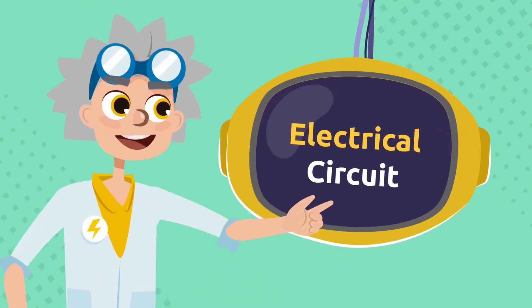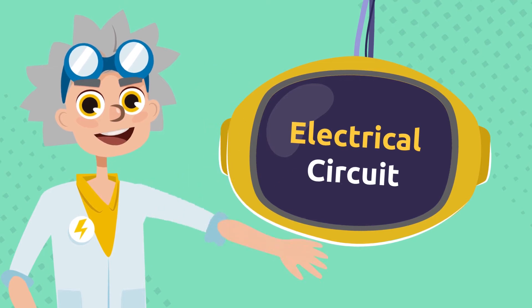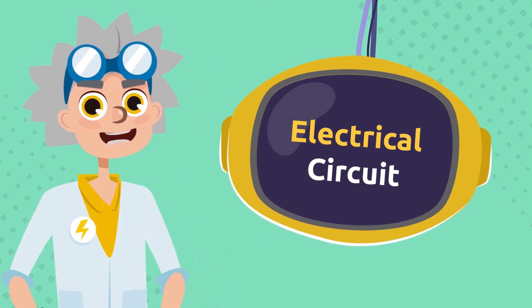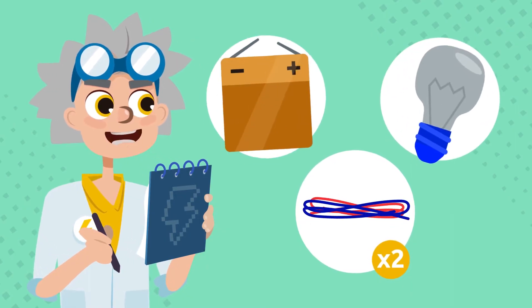We will start by building an electrical circuit, which, as you know, is a closed path that electric charges flow through. I will need two wires, a light bulb, and a battery.